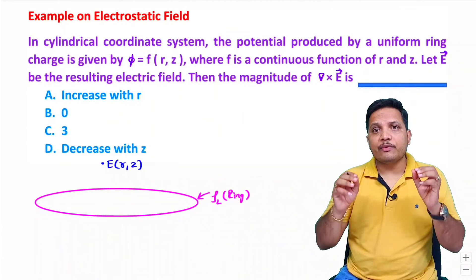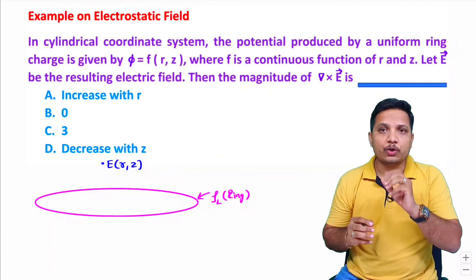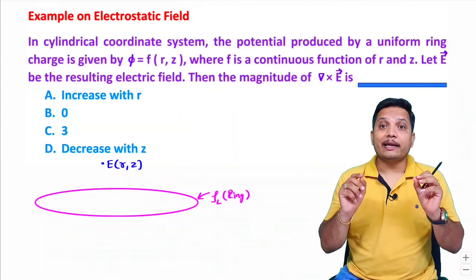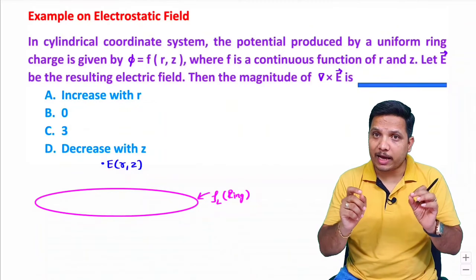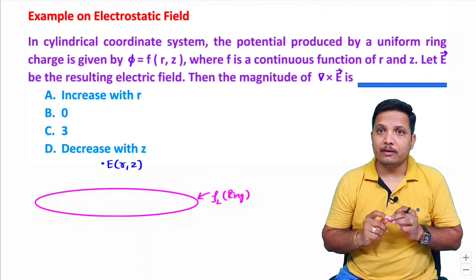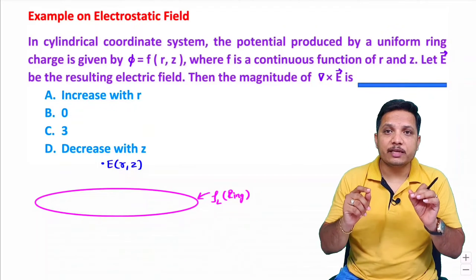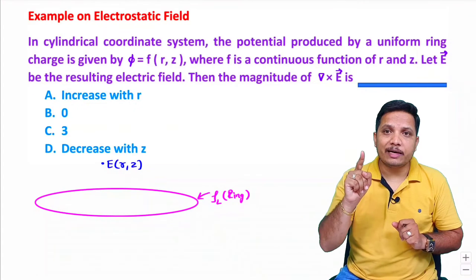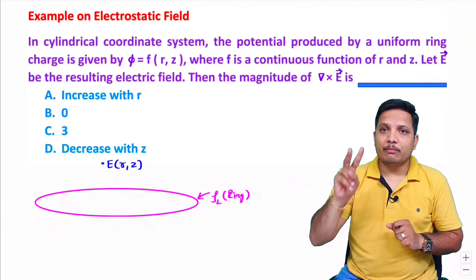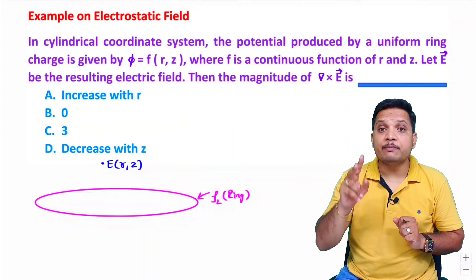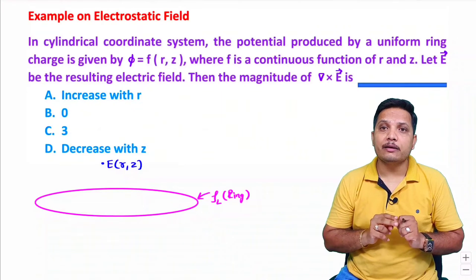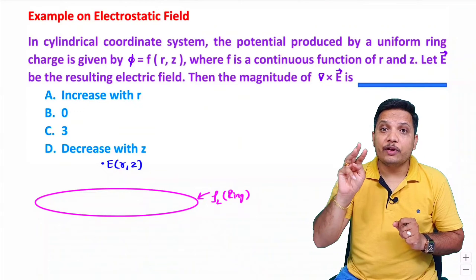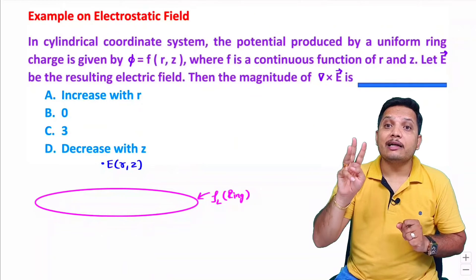There are a few essential points that one should note down. In case of electrostatics, the electric field does not change with respect to time. If the electric field does not change with respect to time, then: number one, the electric field is conservative in nature; number two, the electric field is path independent; and number three, the electric field is curl free.